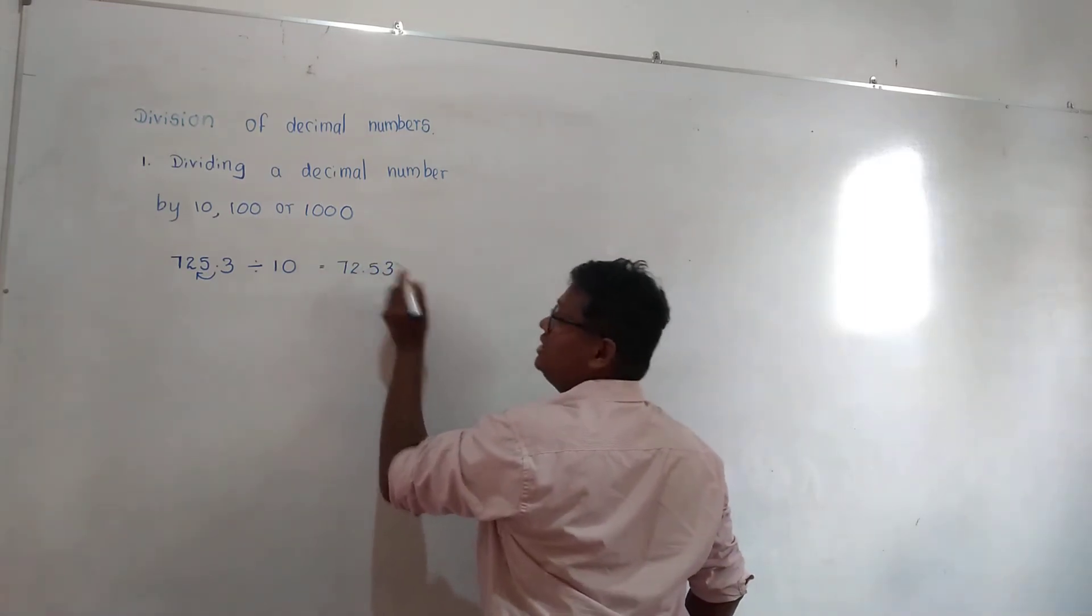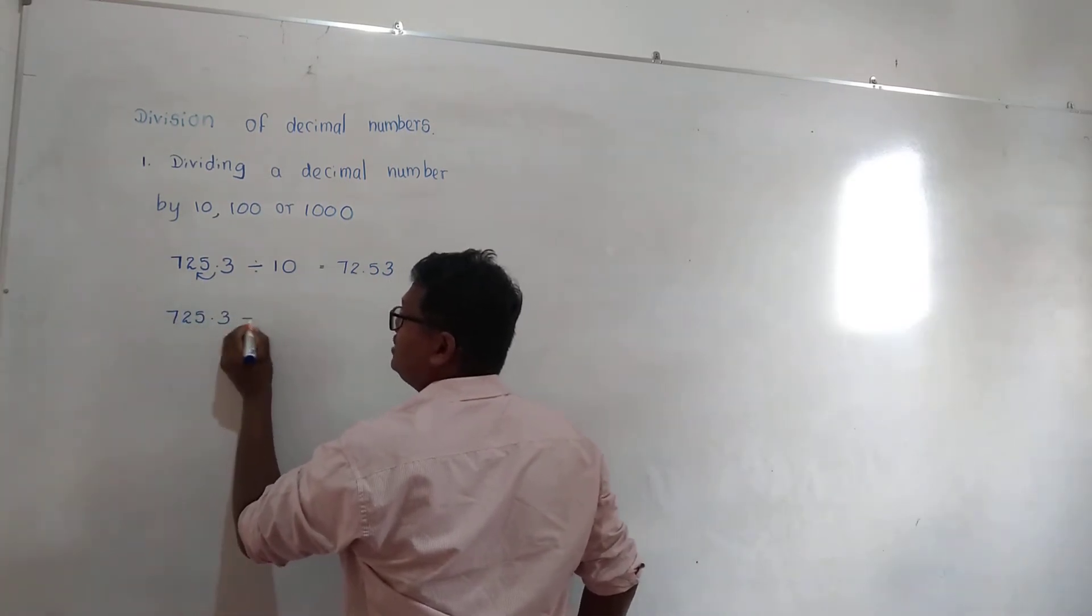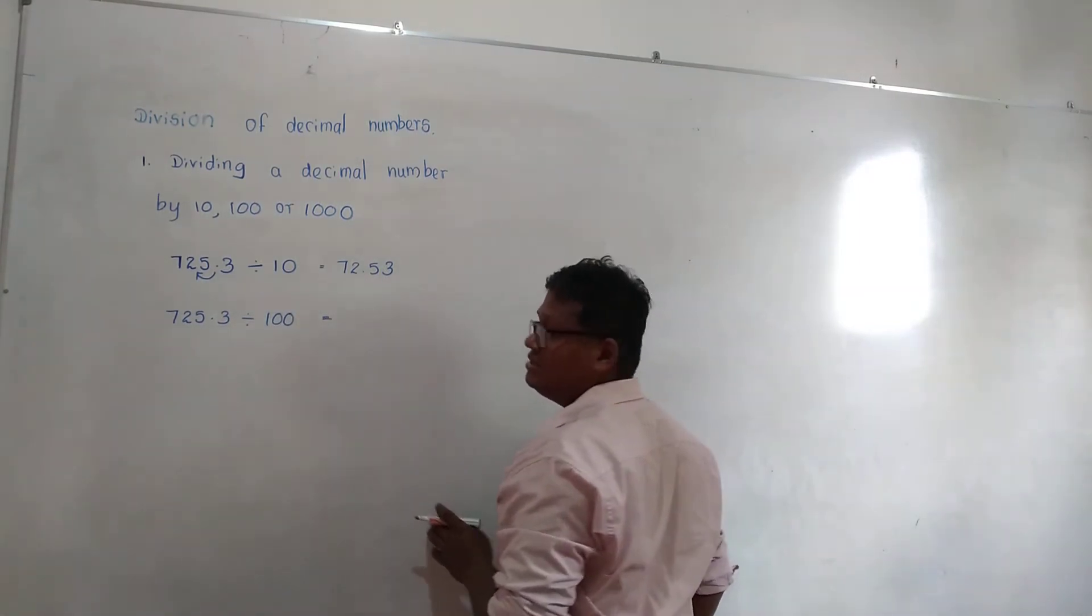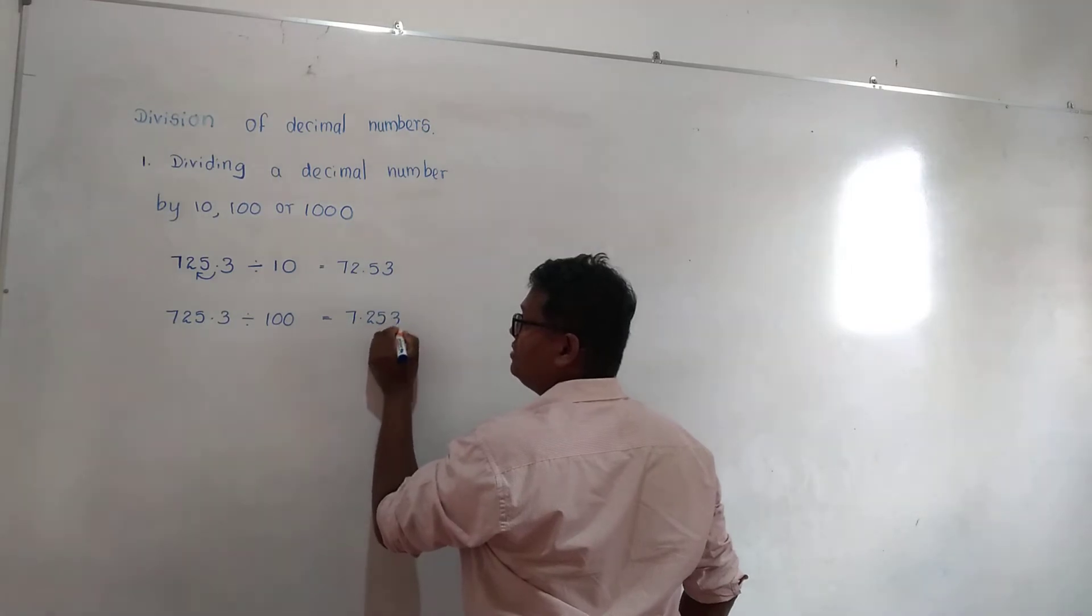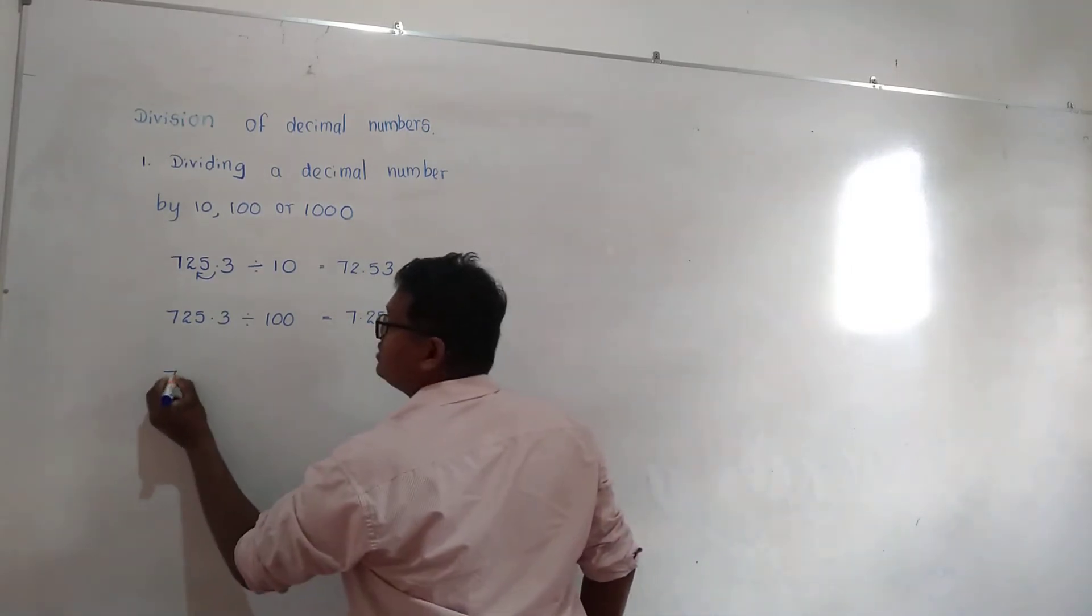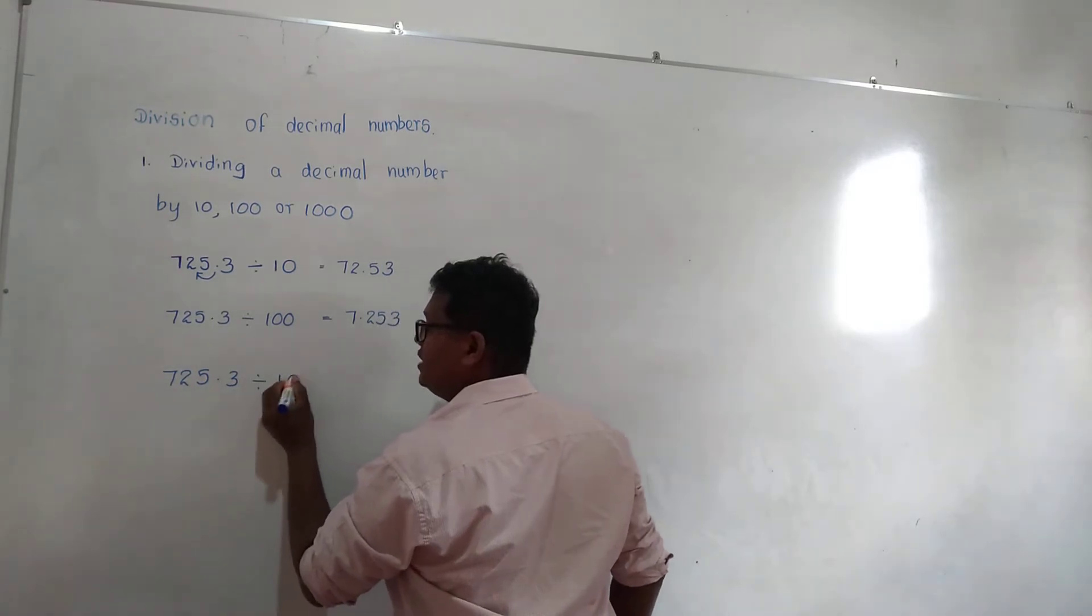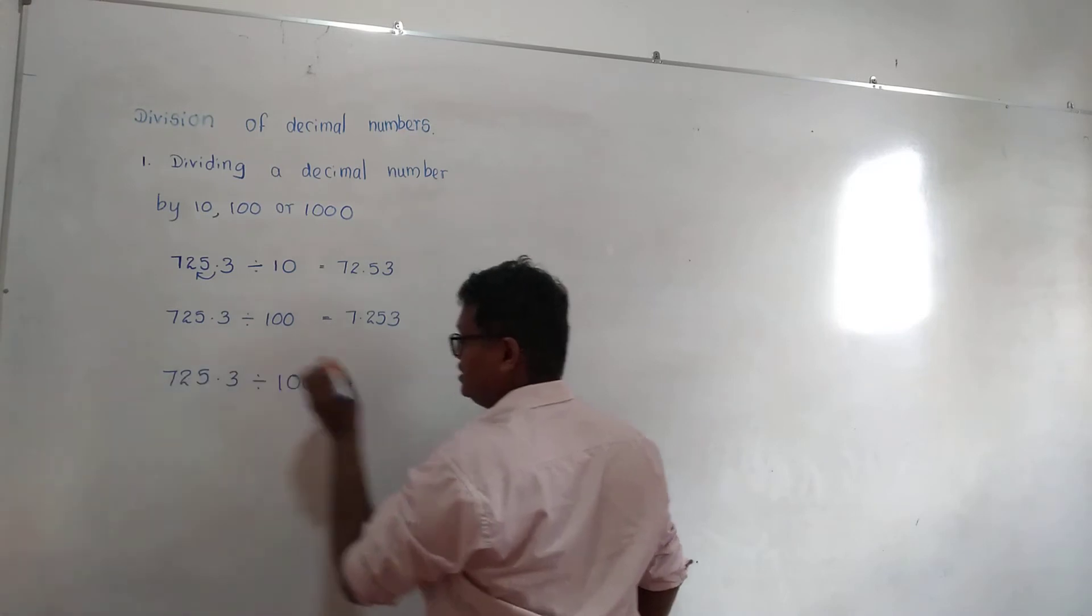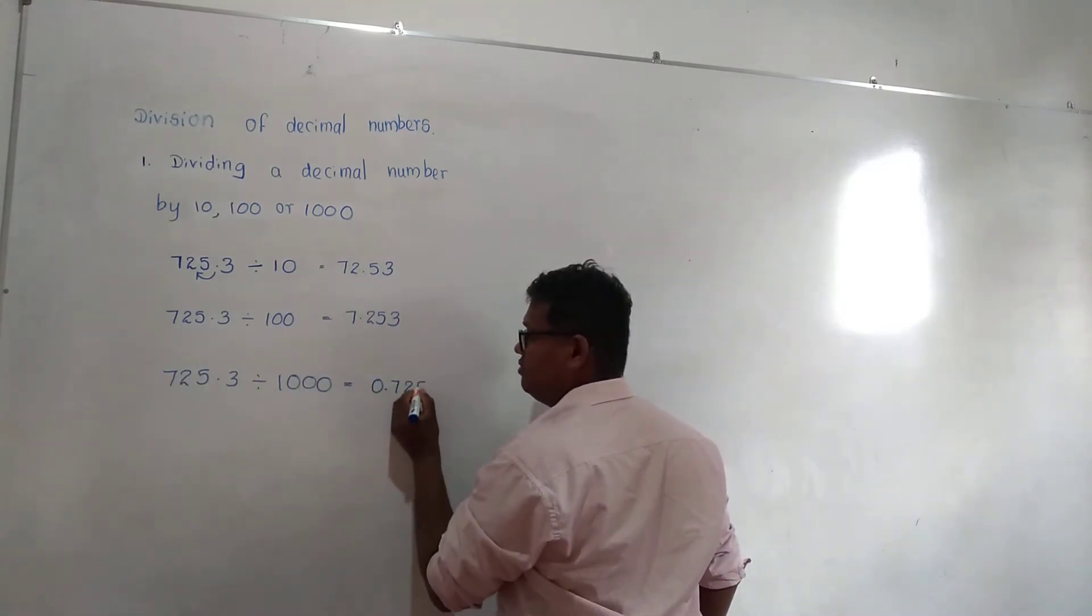725.3 divided by 100, and the answer is 7.253. 725.3 divided by 1000, three times, equals 0.7253.